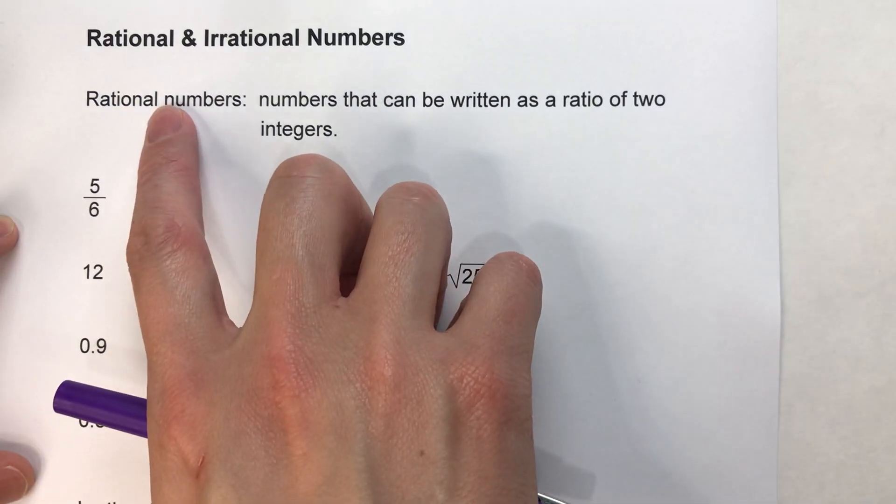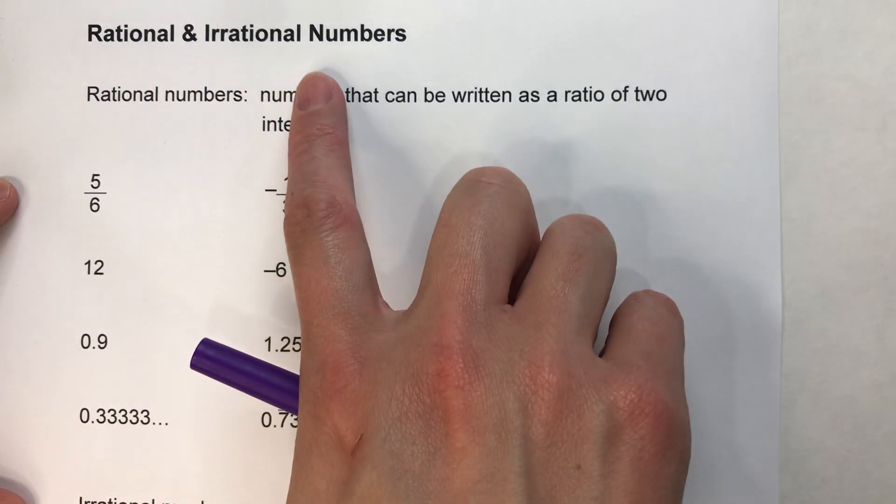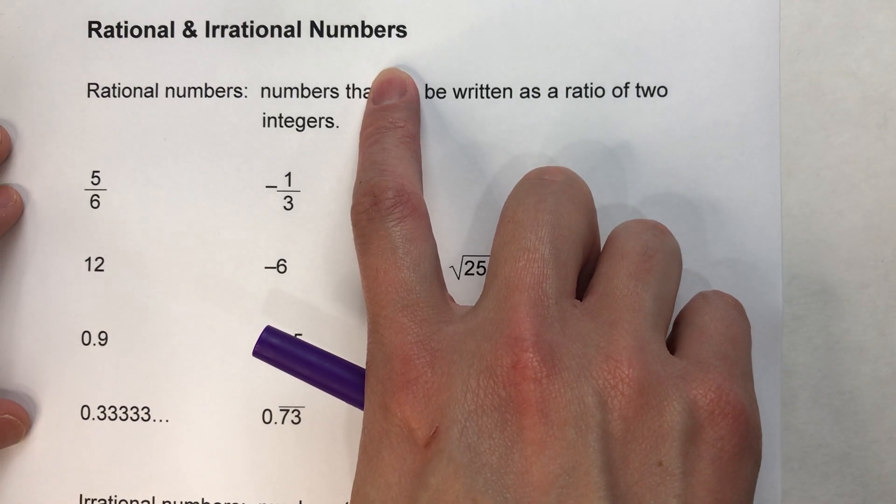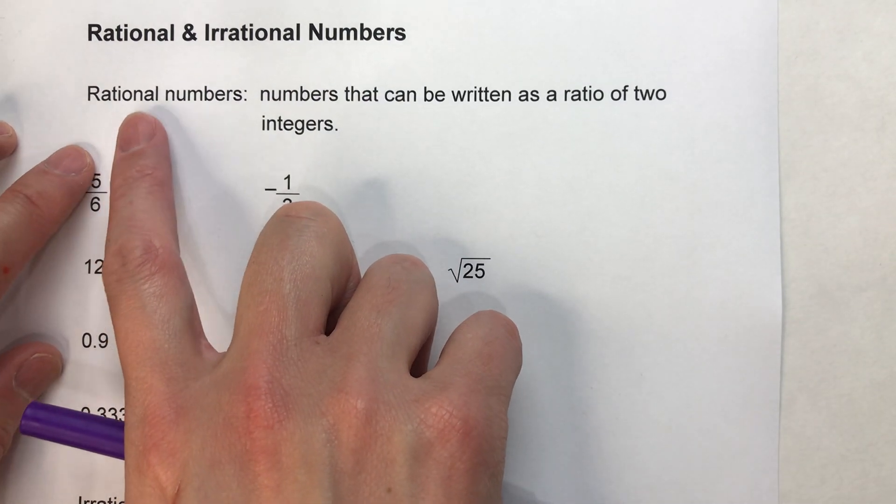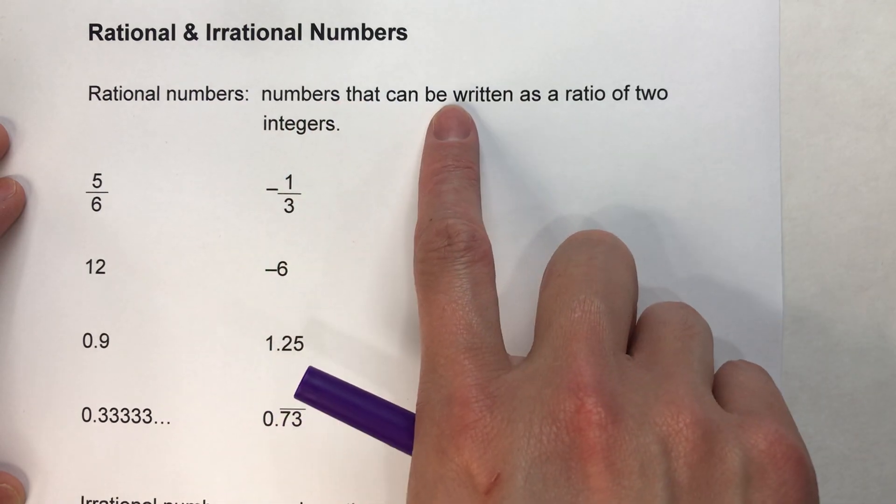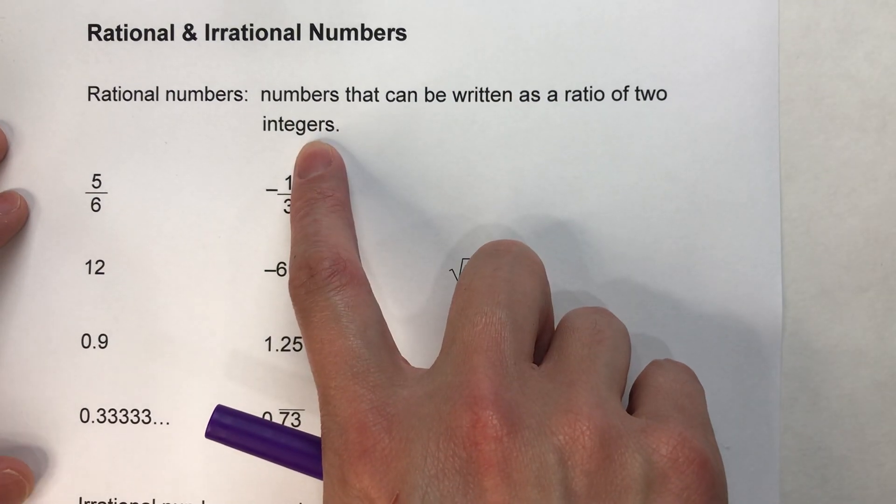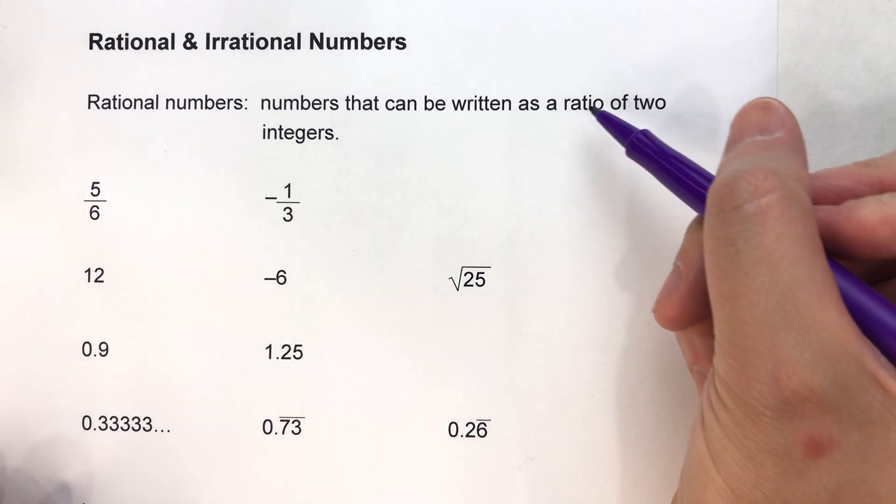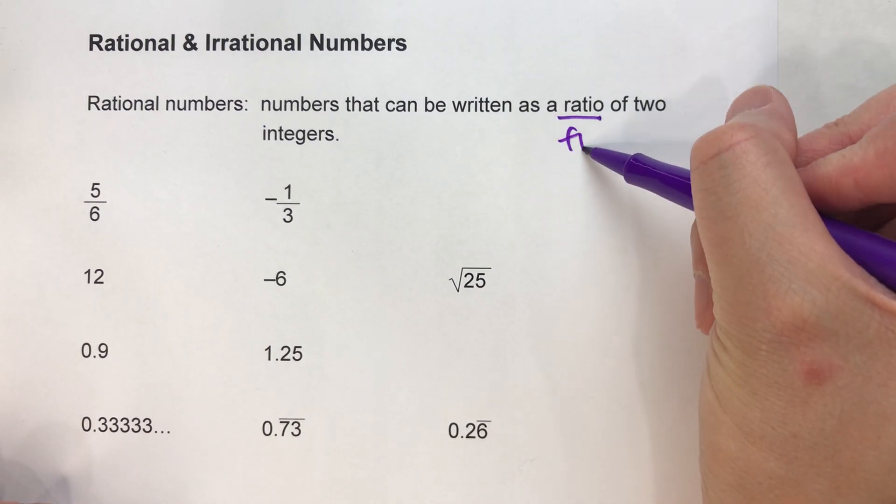Today we're distinguishing between rational and irrational numbers. The definition of a rational number is a number that can be written as a ratio of two integers. In other words,